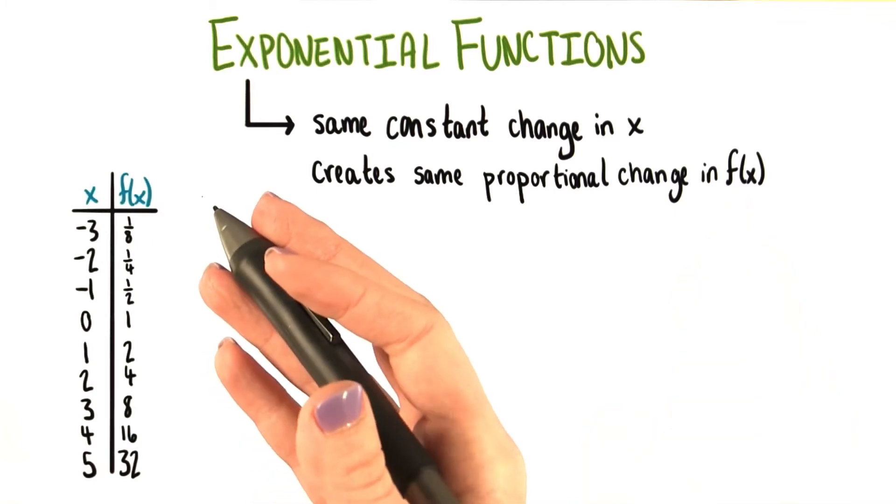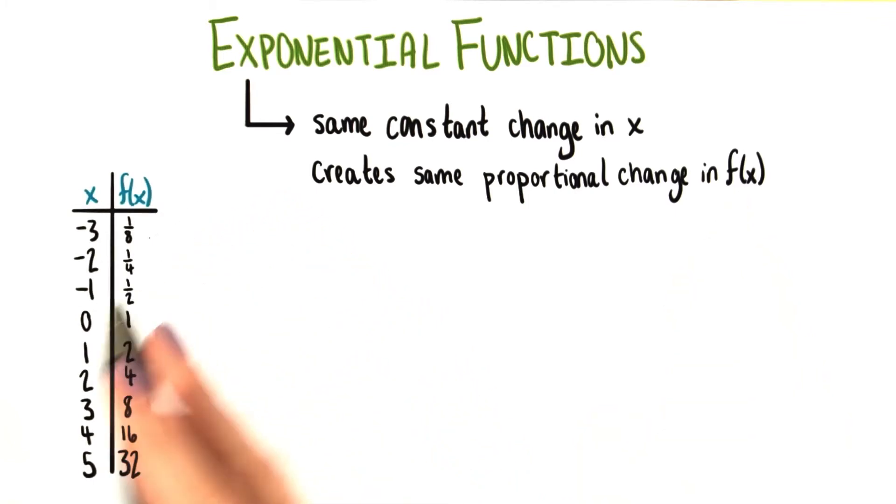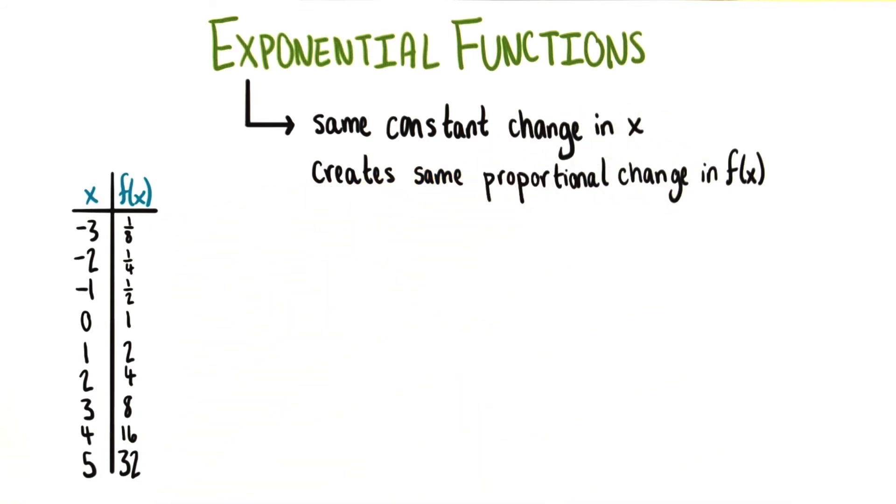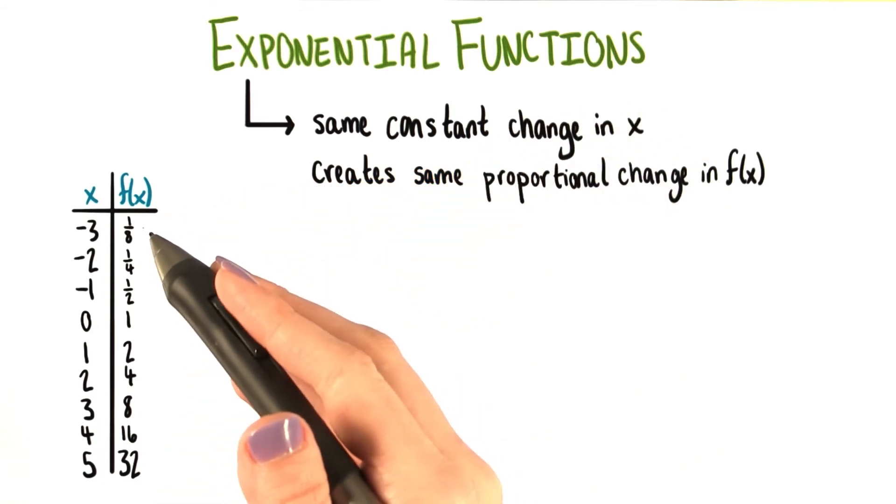In other words, as we saw in our tables that we've worked with, whenever we add a certain amount to x, we're looking at adding 1 every time in this case, f of x is going to be multiplied by a certain amount. In the case of this function, that amount was 2.